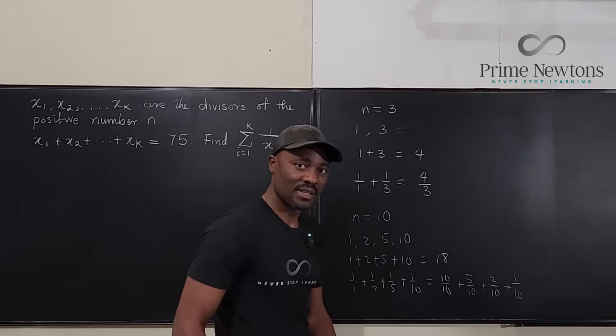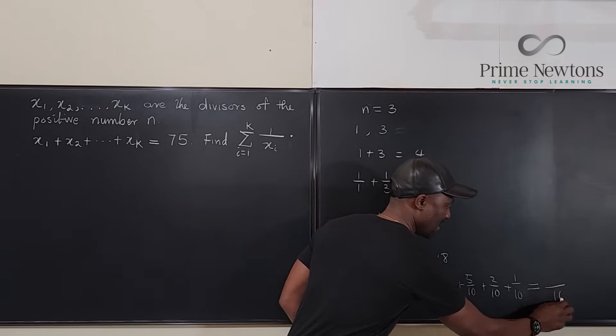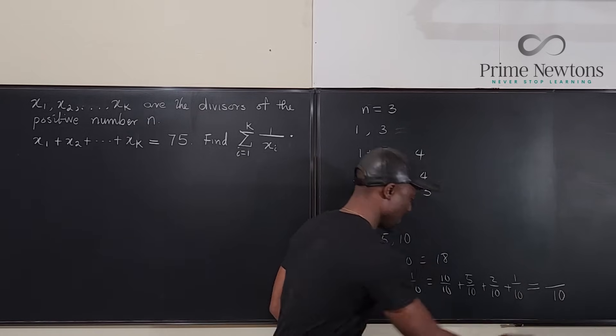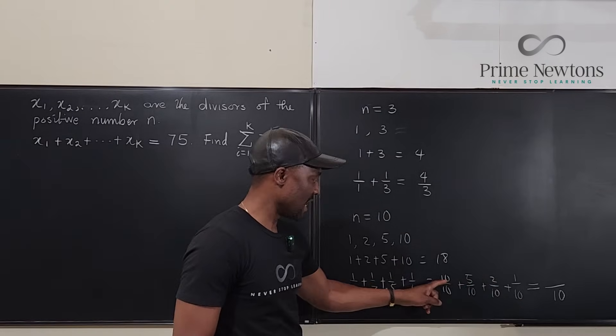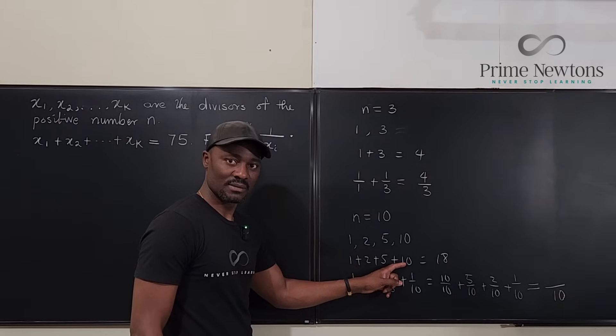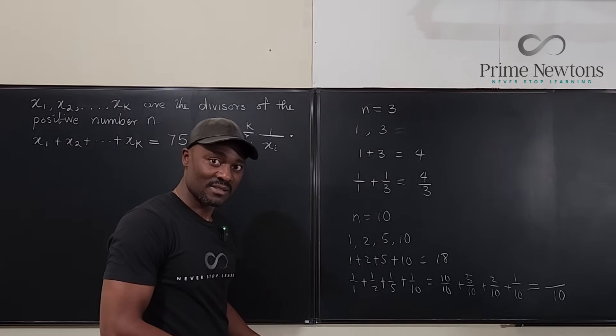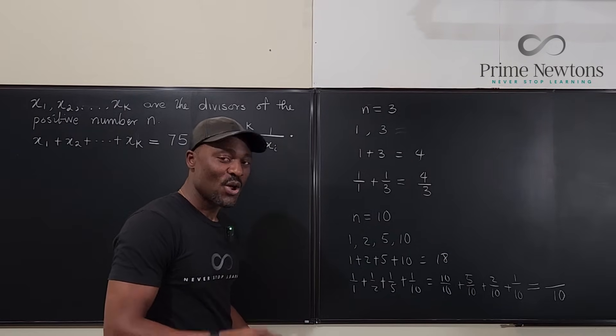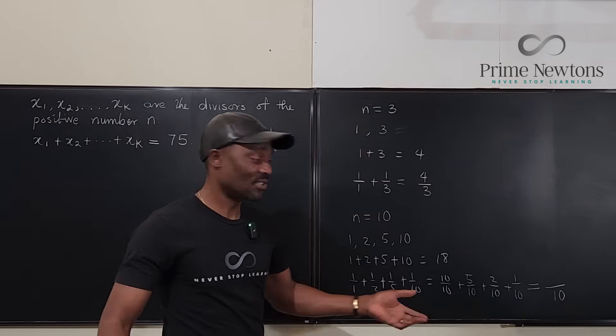Now, notice that the common denominator is going to be 10, and the top is 1 plus 2 plus 5 plus 10, which is the same thing as 1 plus 2 plus 5 plus 10. Do you see it? So, you can already see that there's a pattern of answers. One more, and then I'll write the whole thing. You can see what the answer is going to be.